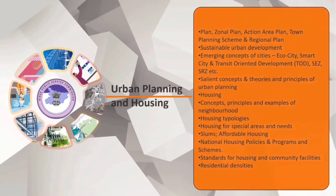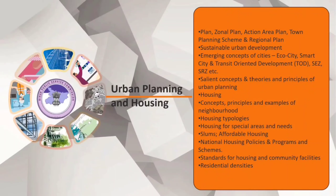The sixth section is about urban planning and housing, in which you have to study various plans and hierarchy of urban planning including general development plans, action area plans, town planning schemes and regional plans. Urban planning theories are also important, such as Garden City, Multiple Nuclei Theory, Neighborhood Cities, Radiant Cities and other famous urban planning theories. In the housing sector, questions will be based on housing typologies, housing for special areas and needs, affordable housing, various government schemes associated with affordable housing such as PMAY, and national housing policies, programs and schemes.